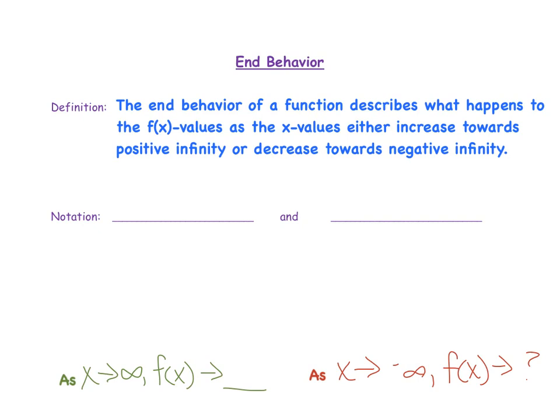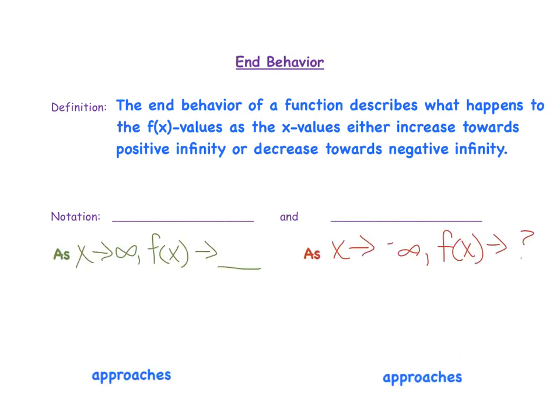Now let's look at some notation so you can see how we will write this mathematically. First we will look at what I've written in green. You read this statement as: x approaches infinity, f of x approaches — and we're just going to use a blank — it's either going to be positive infinity or negative infinity.